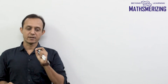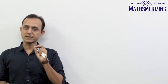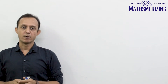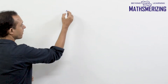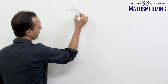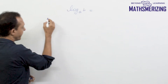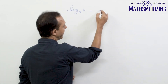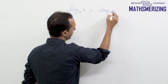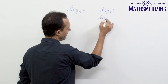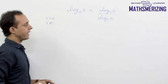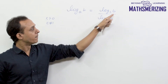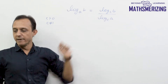One of the most important properties in logarithms is the base-changing property. We can change the base of a logarithm if we want. The property states: log B base A, where C is some number greater than 0 and not equal to 1, can be written as log B base C divided by log A base C. So log B base A can be written as log B upon log A to some valid base C.